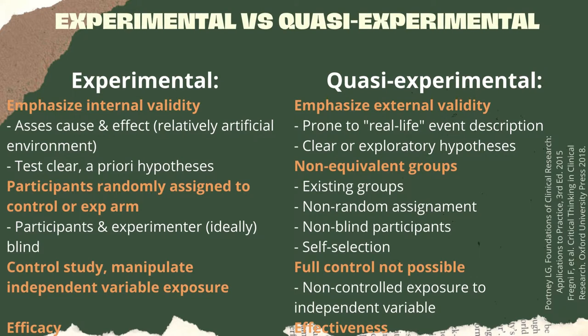Internal validity is of concern in experimental studies, meanwhile quasi-experimental is prone to external validity. This is due to the purpose of experimental studies that tries to assess cause and effect, creating a relatively artificial environment. Meanwhile, quasi-experimental is more prone to real-life descriptions, and participants in experimental studies get to be randomly assigned to either the control or experimental arm. In quasi-experimental, we normally have non-equivalent groups.